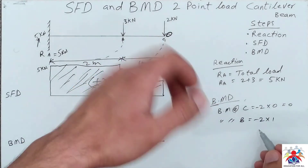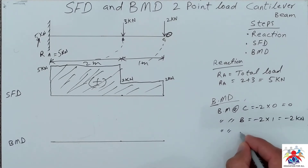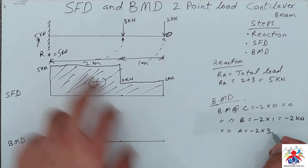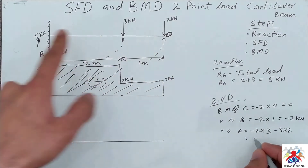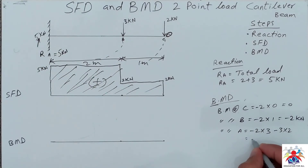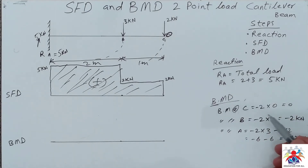Bending moment at point C: minus 2 multiplied by 3, minus because the force is acting downwards, so it will be minus 6 kilonewton-meters. Bending moment at point A: minus 2 multiplied by 3, that's minus 6, then minus 3 multiplied by 2, that's another minus 6, giving a total of minus 12 kilonewton-meters.